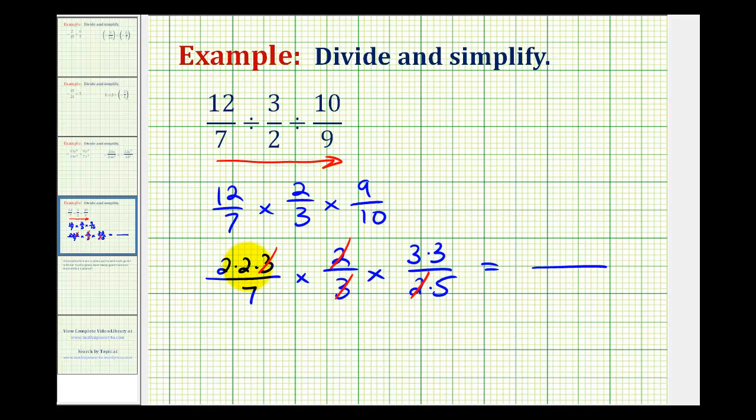So we have two times two times three times three, which would be 36, and the denominator is seven times five, which is 35.